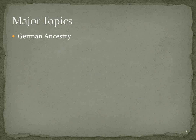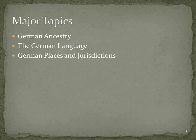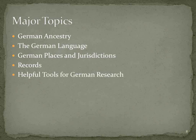We're going to talk a bit about the nature of German ancestry. I recognize that there are viewers from all over the world, but it will be oriented a bit more towards those people who are already in North America with German ancestors. We'll discuss the issue of the German language, German places, German jurisdictions, which are critical to understand in order to figure out where the records are. Then we'll talk about the major records for German research, and we'll end with some helpful tools.